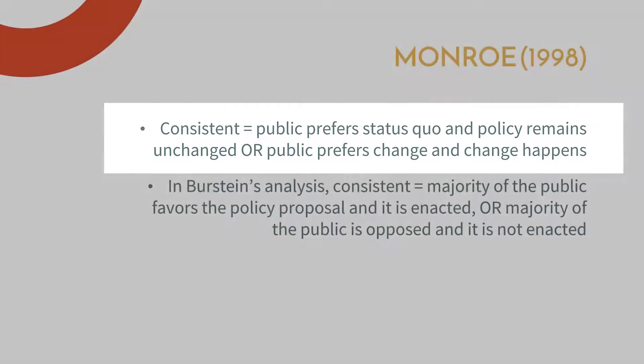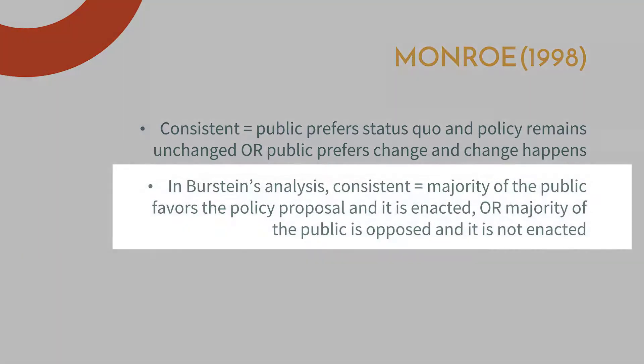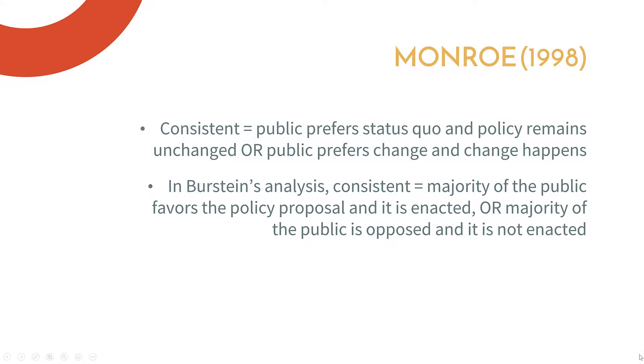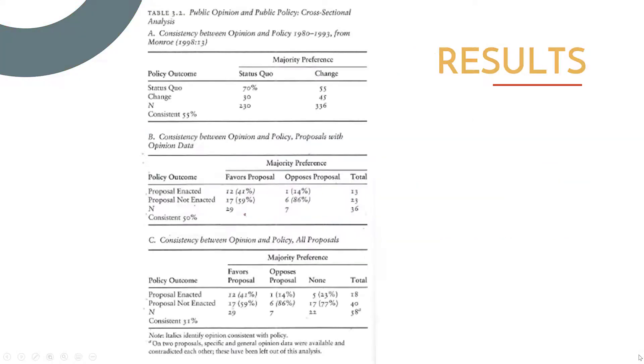In Burstein's analysis, consistency is measured as: if the majority of the public favors the policy proposal and it's enacted, that's consistent. On the flip side, if the majority of the public is opposed to the proposal and it is subsequently not enacted, that is also consistent. Let's check out his results — here's a table, don't freak out. Let's look at it step by step.